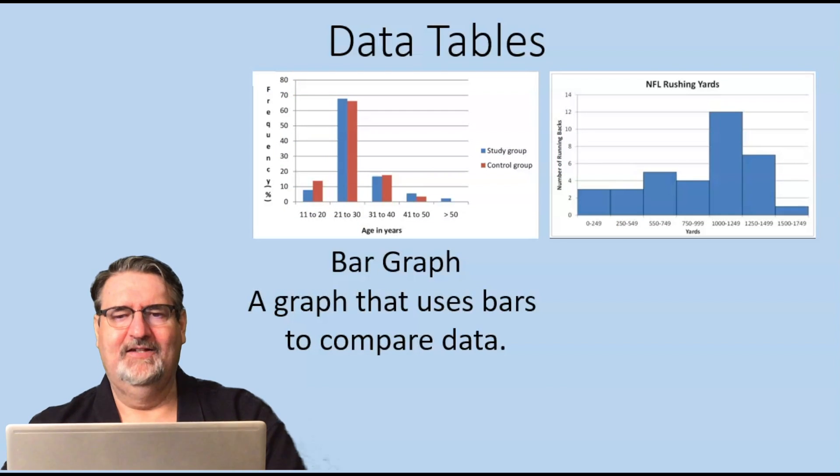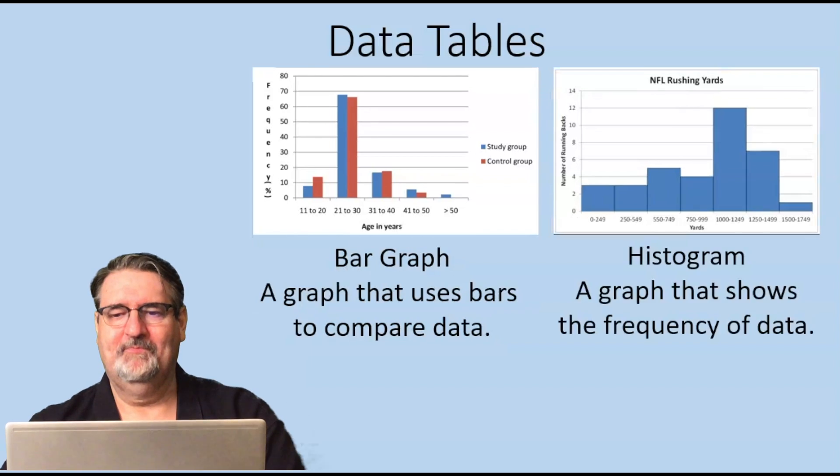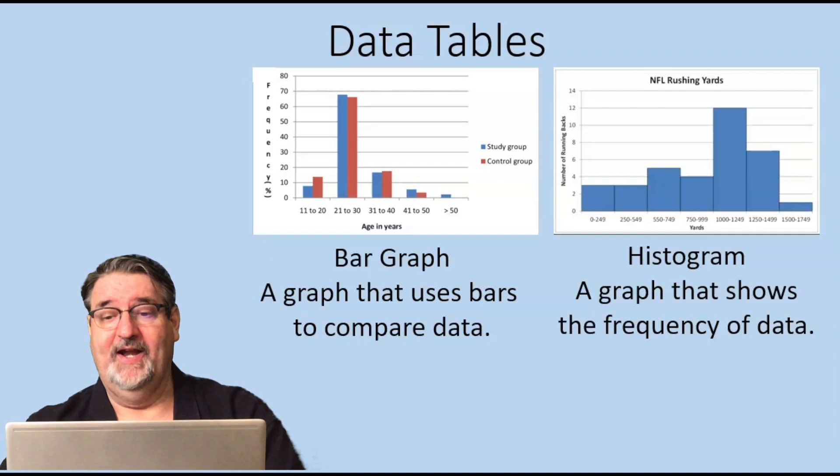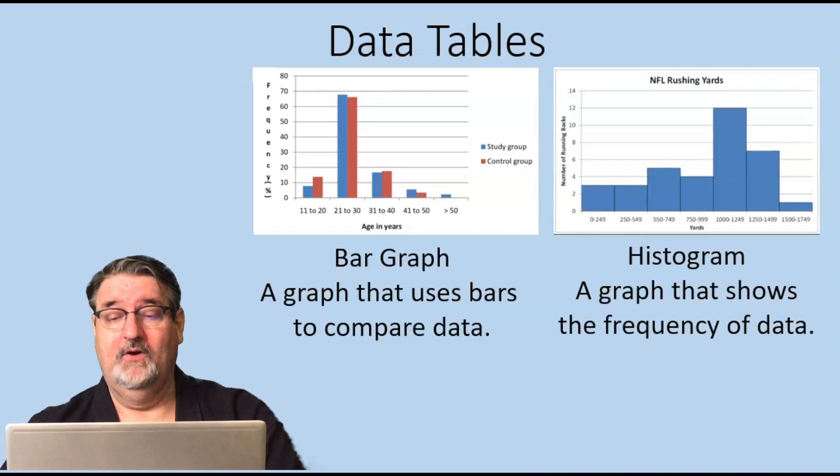Now there's a difference between a bar graph and the data table. So a bar graph is a graph that uses bars to compare data. Here's the histogram, which is what we're using in this example for this graph—a graph that shows the frequency of data.